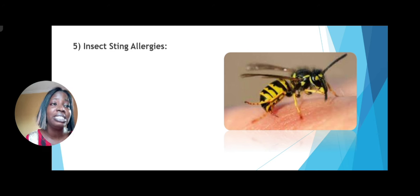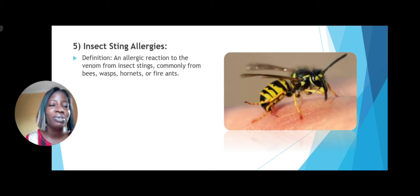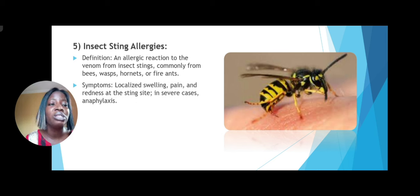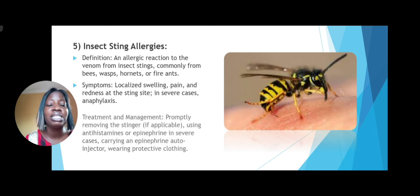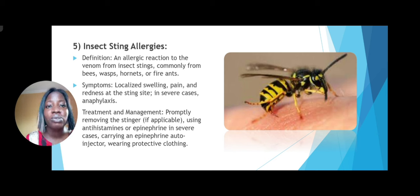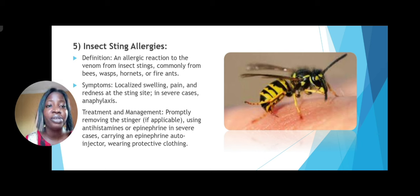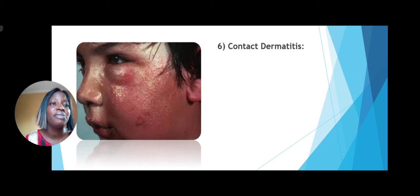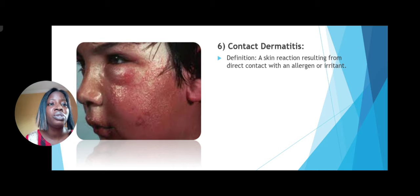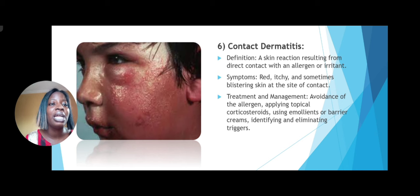Then we have insect sting allergies, caused by maybe wasps and bees — when being stung by such insects it can lead to these allergies. In severe cases, symptoms can include anaphylaxis. Treatment involves promptly removing the stinger and using antihistamines as well as epinephrine in severe cases. Protective clothing can help as well. Then we have contact dermatitis — a skin reaction resulting from direct contact with irritants. Symptoms include itching, redness, and blistering skin at the site of contact. Treatment involves avoidance of the allergen as well as applying topical corticosteroids.